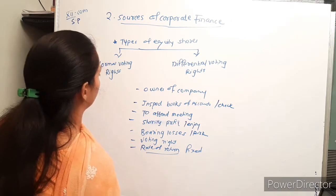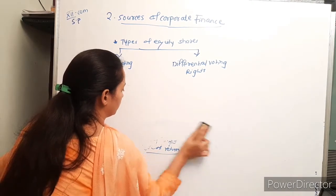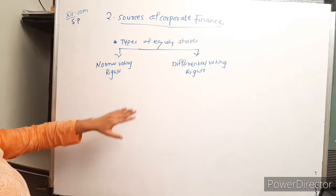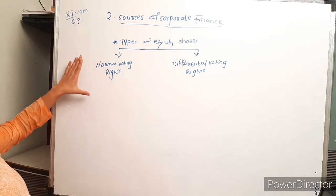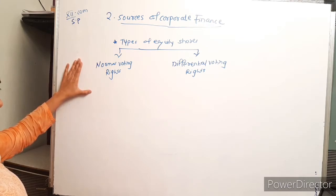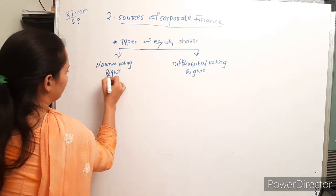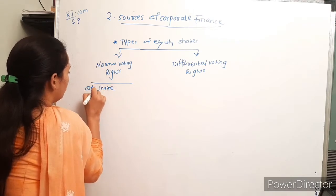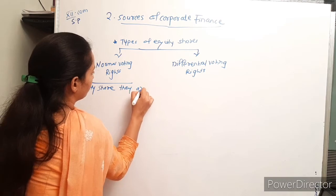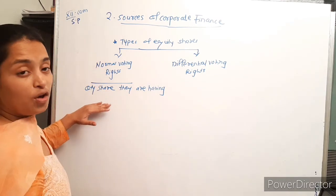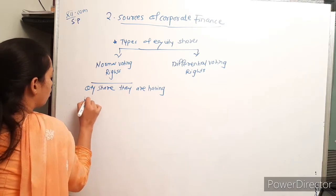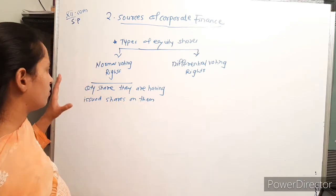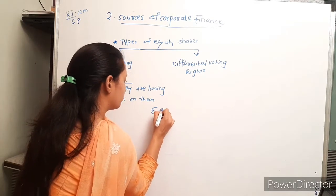Normal voting rights means voting rights are in proportion to shareholdings. For example, let's take Ambani Group, which has issued 1000 shares in the market.